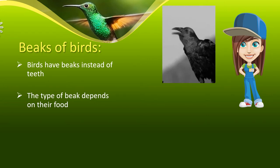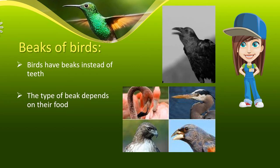The shape of a bird's beak depends upon the food it eats. Seed-eating birds have short, sharp, pointed beaks — example: sparrow. Hunting birds have strong, sharp, hooked beaks — example: eagle. Insect eaters have thin, pointed beaks — example: myna. Nectar-drinking birds have slim, long beaks — example: sunbird. Woodpeckers have long, strong, pointed beaks to make holes in trees. Ducks have flat beaks to strain out water and mud.